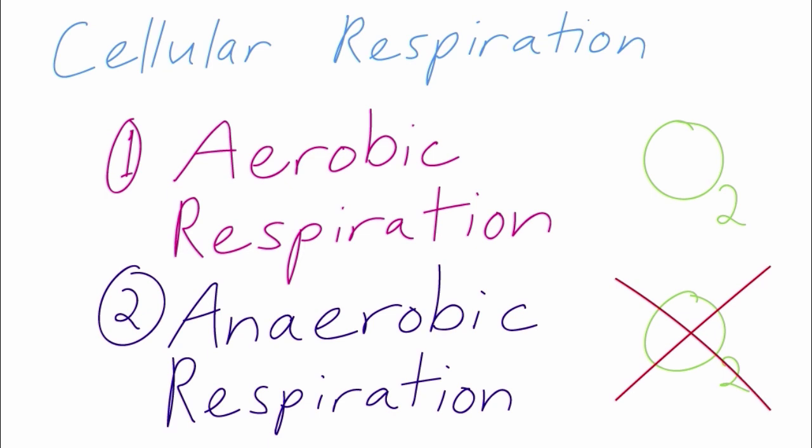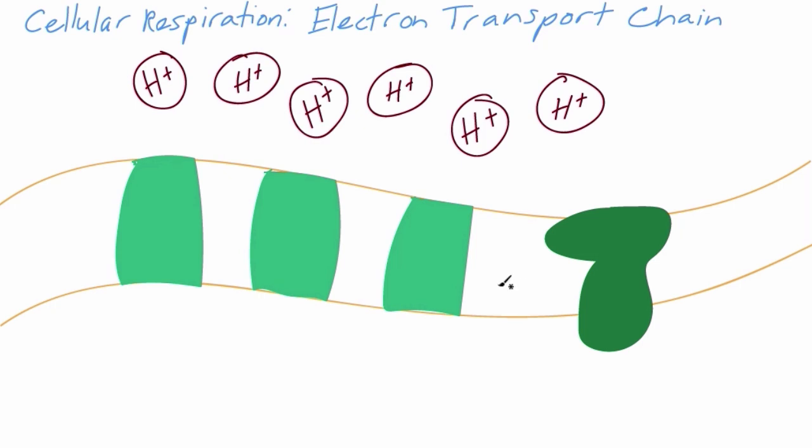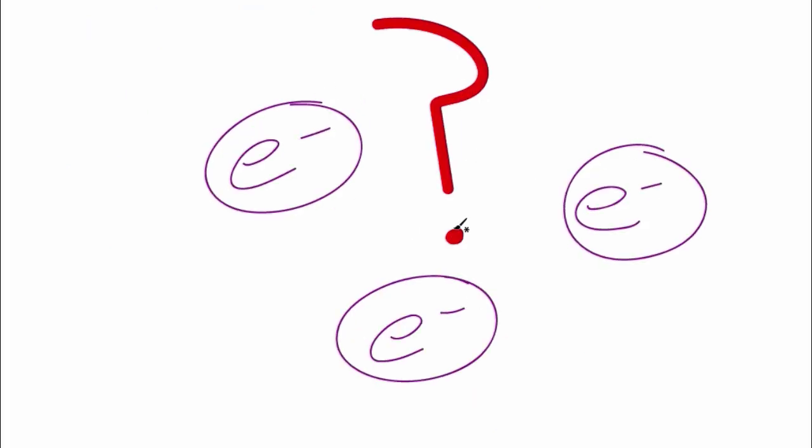The two processes are very similar. They only differ in the final step of respiration, the electron transport chain. One question we have not answered is this: Where do the electrons go after they are passed along the membrane? These electrons bind to a final electron acceptor at the end of the electron transport chain.